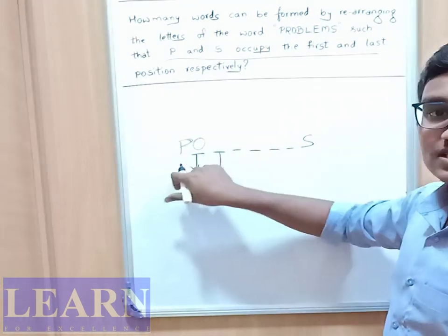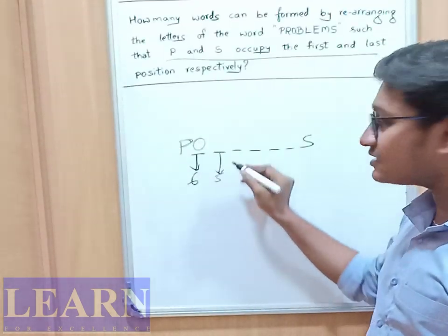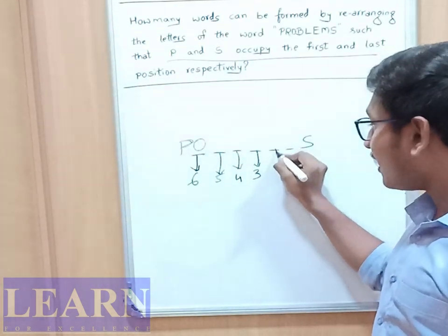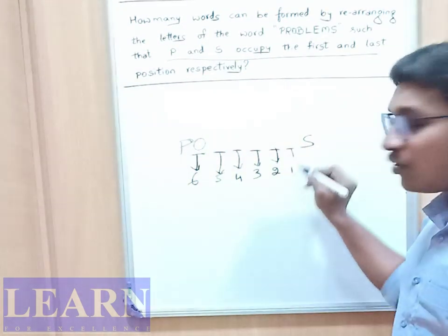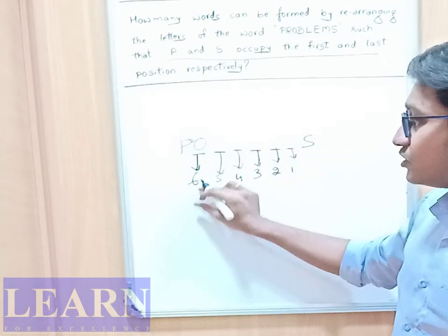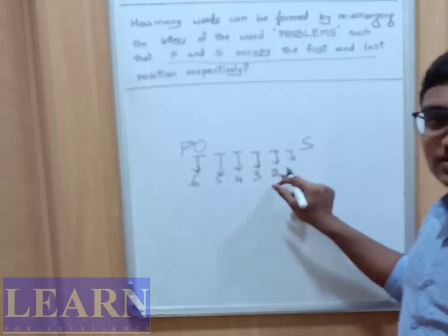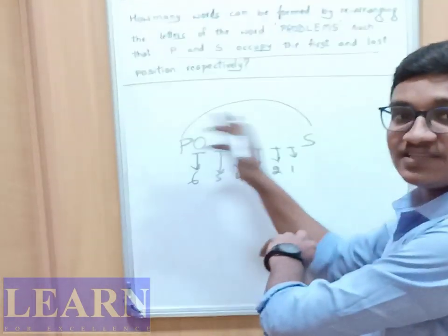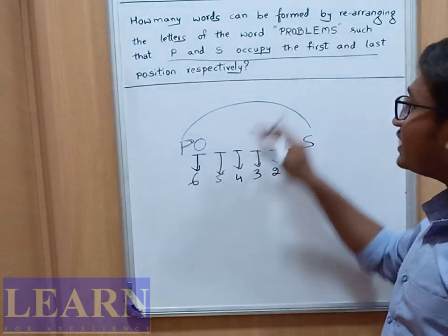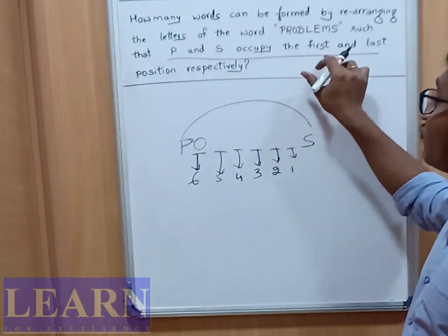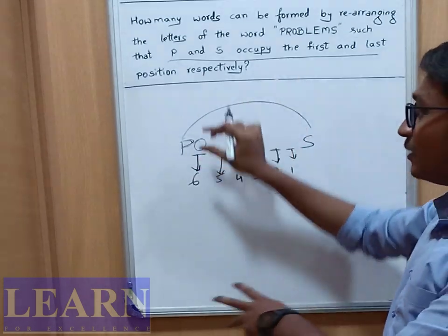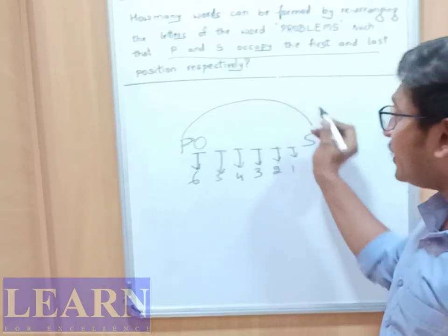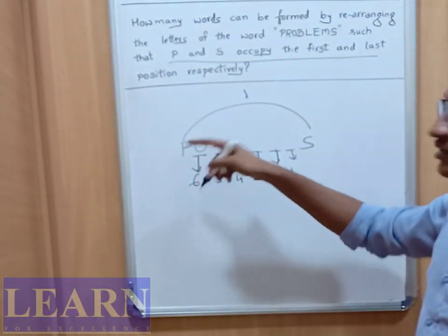Now here, how many ways? Already one is fixed here, remaining five letters are there. We can arrange by five ways, here four ways, and here how many ways? Three ways. What about here? Two ways. And what about here? One way. Now this position: six ways, five, three, four, three, two, and one. If we observe first and last positions, P and S, we can't interchange this P and S. Why? Because they clearly mention that P and S are the first and last positions respectively. P's position is first position and S position is last position.